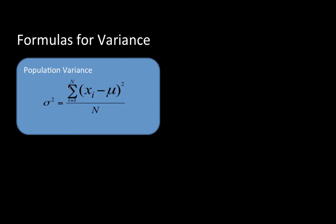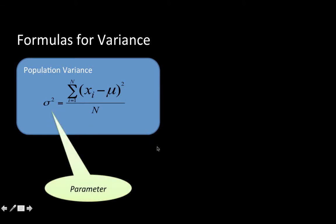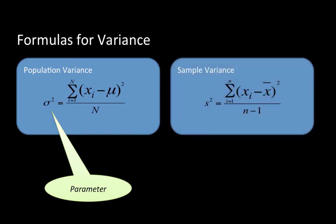The symbol for variance is sigma squared — the Greek symbol sigma, squared. That is the symbol for population variance. Unlike mean, the computation of sample variance is slightly different. When you have a sample, you divide not by n, but by n minus 1. That is the only difference, because we are using the sample variance as an estimate of the population variance.